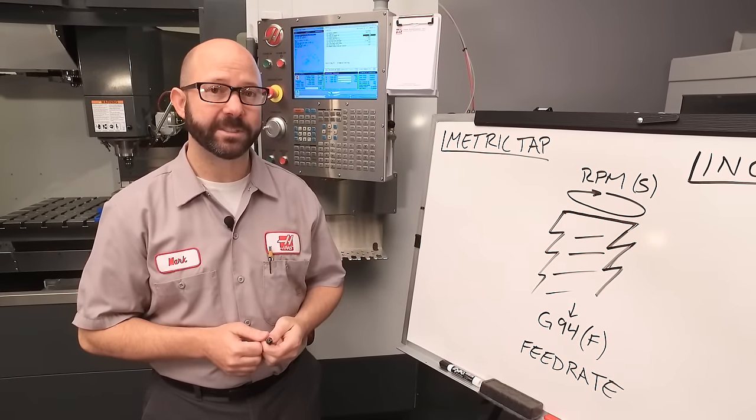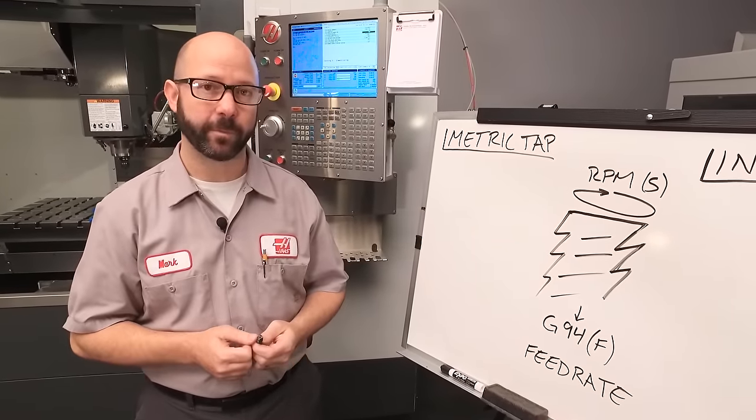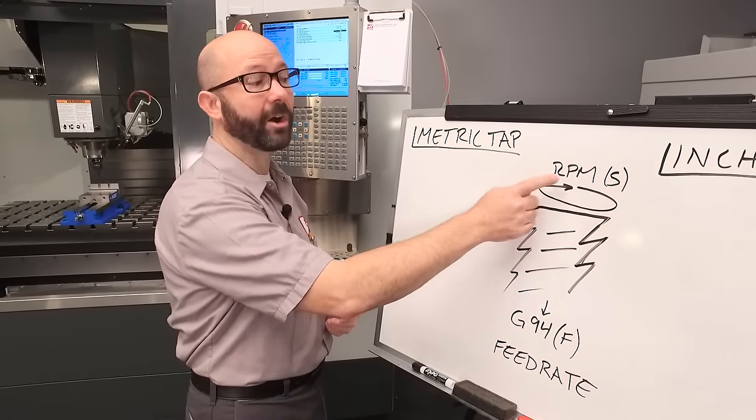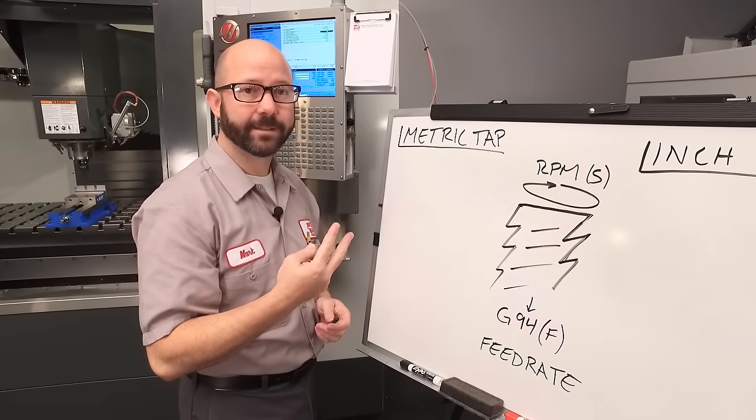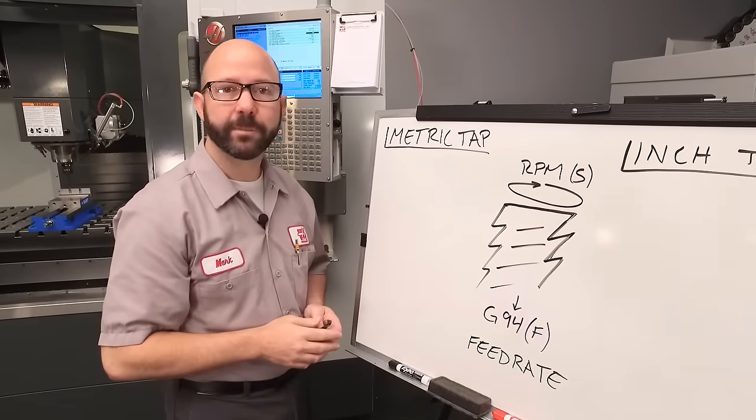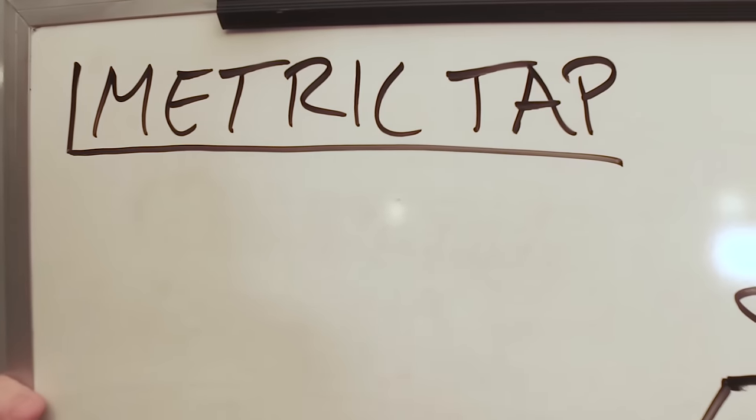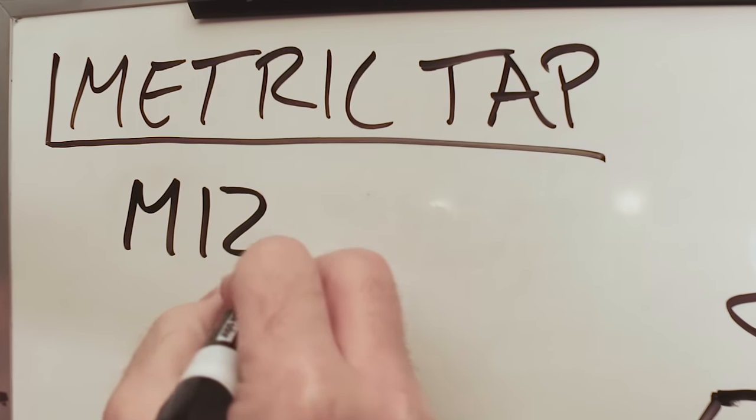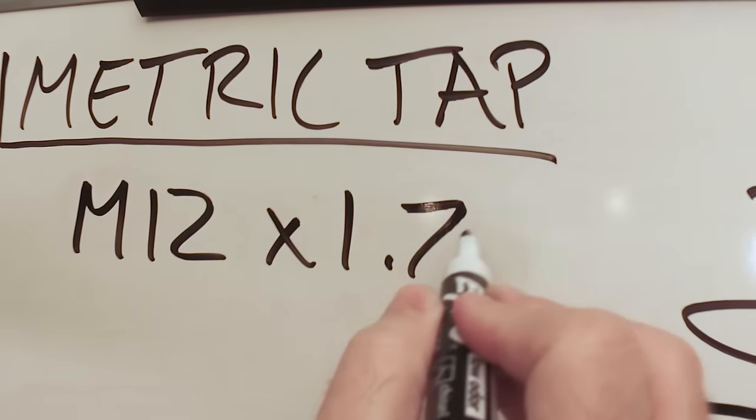Our G84 tapping cycle needs two critical pieces of information. First, it needs to know our RPM, our S value. And second, we need to know our G94 millimeter per minute feed rate. Now for this first example, we're going to use an M12 by 1.75 tap.